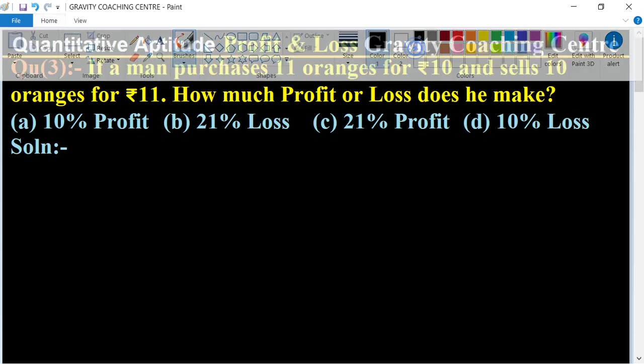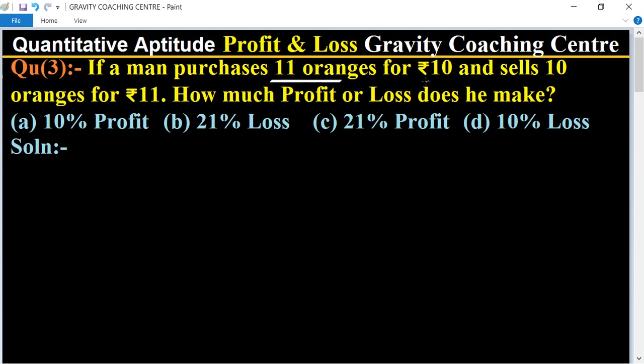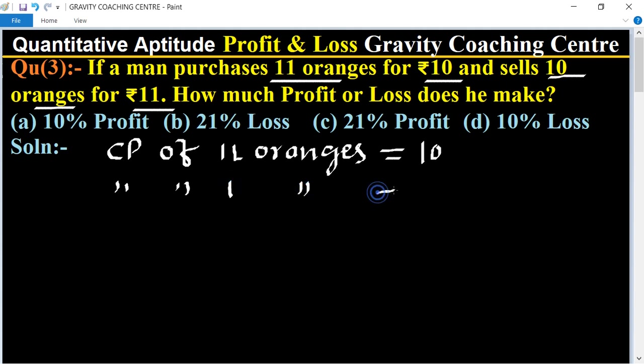In this question, cost price of 11 oranges equals rupees 10, and selling price of 10 oranges equals 11. So first, cost price of 11 oranges is equal to rupees 10, and cost price of one orange equals 10 upon 11.